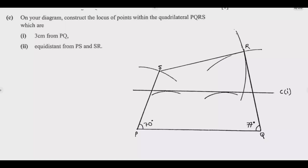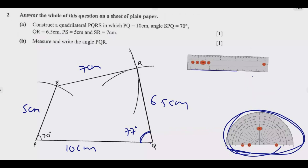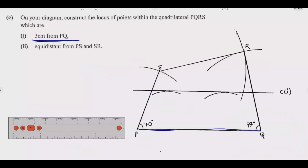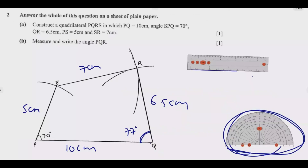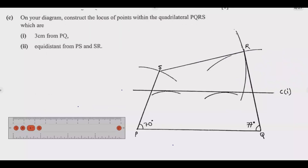We move to Question C: construct the locus of points within quadrilateral PQRS which are 3 centimeters from PQ. Since PQ is a line, you need to find all points that are 3 centimeters from it. Get your ruler, place the compass and measure 3 centimeters. Pin the compass on the line PQ at two different points and make arcs, then use a ruler to join those two points in a straight line — all points on this line are 3 centimeters from PQ.